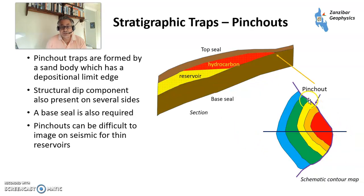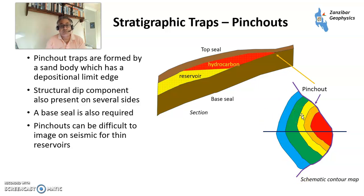Stratigraphic pinch-out traps are a situation where reservoir deposition stops: you have a top seal, a base seal, a pinch-out, and three-way dip. The first field I ever worked on — Everest in the North Sea — is this type. They can be difficult to image on seismic, particularly for thin reservoirs, so you need a geological model. But if you have a seismic anomaly, that really helps, and that's how many of these are uncovered — some by luck, some by deliberate mapping.